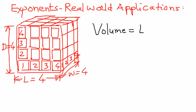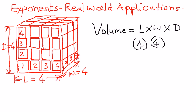The volume is the length — the long side — times the short side, times the depth. L is the long side which is four cans, the width is four cans wide, and the depth is four cans deep. I can represent this as an exponent: four to the power of three.